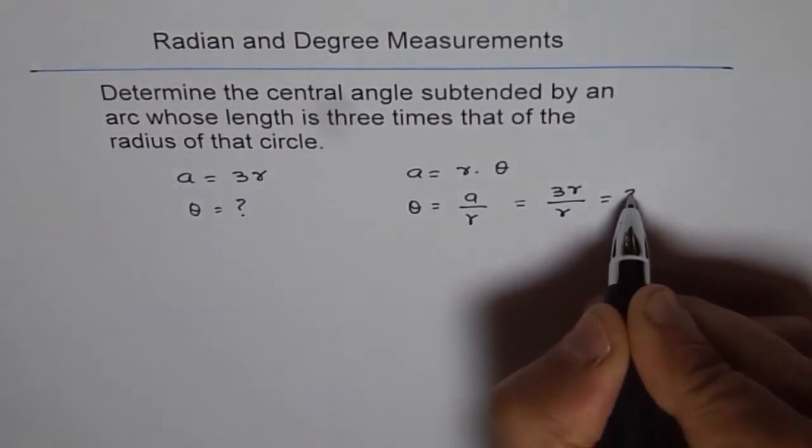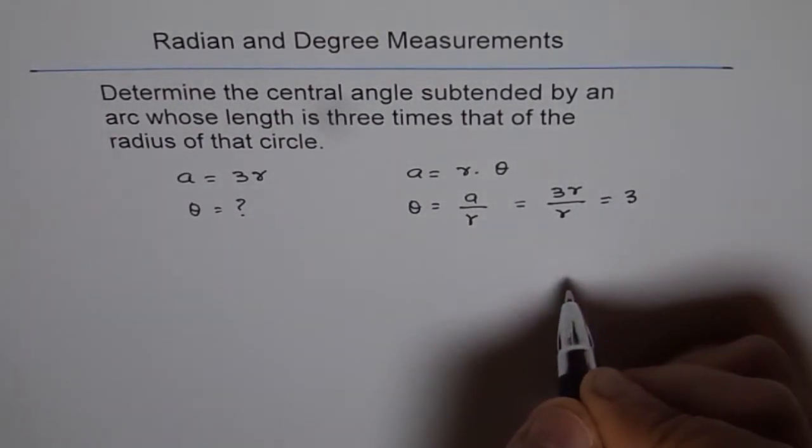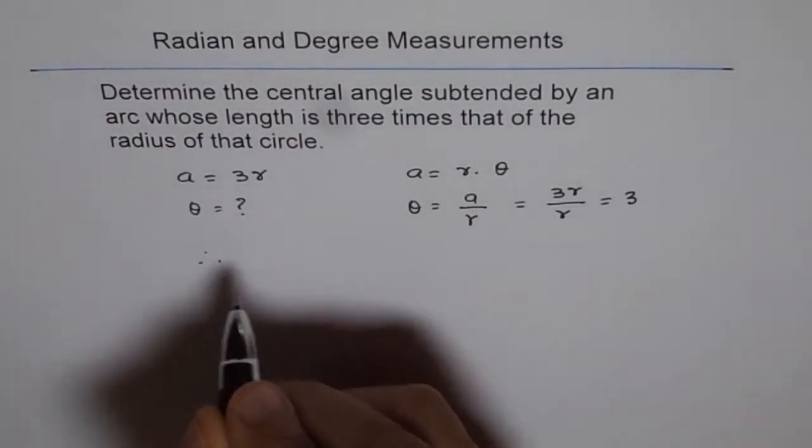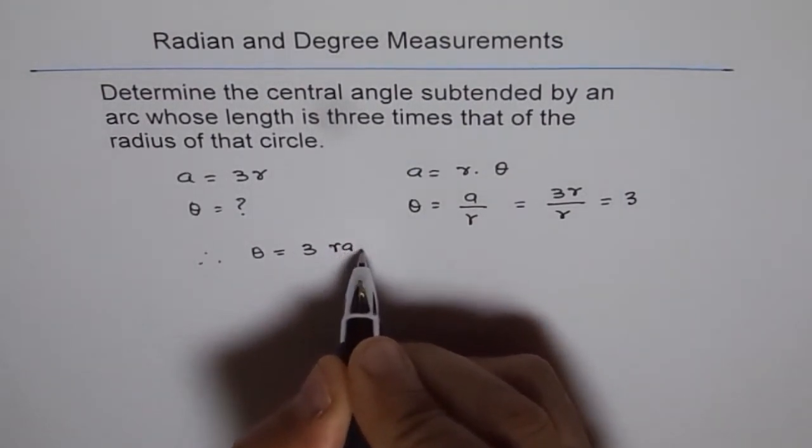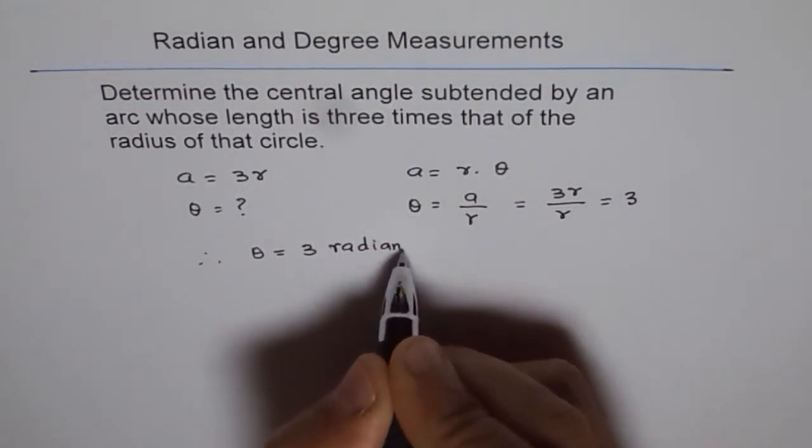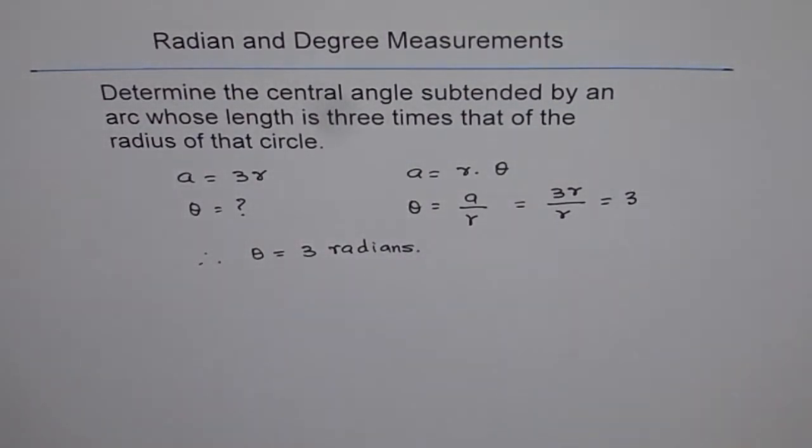And we get three as our answer. Do you see that? Therefore the angle theta is three radians. Do you see? You should remember the definition of theta in radians is ratio of arc over radius.